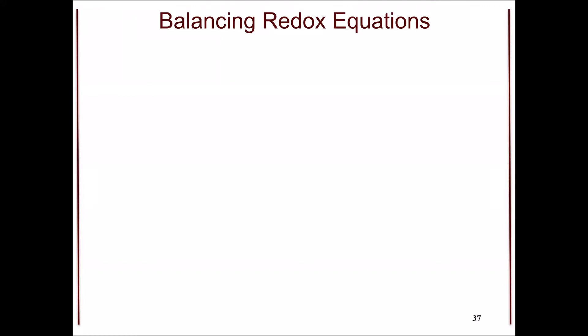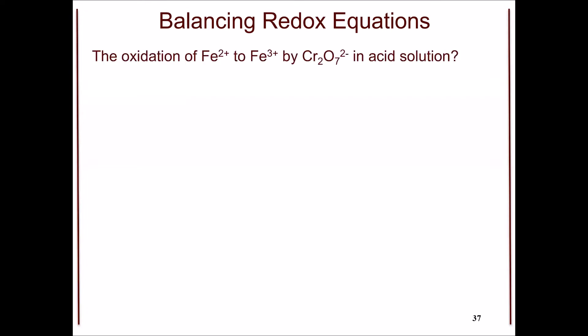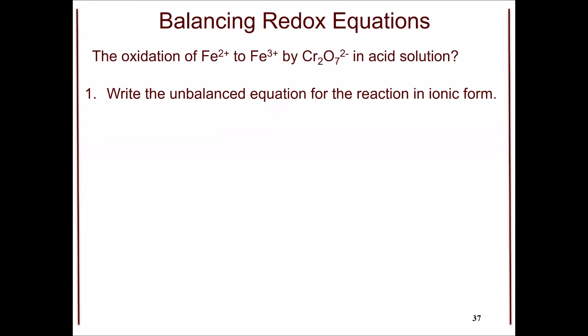Balancing a redox reaction is a little bit more tricky than a regular reaction. For example, the oxidation of iron 2+ to iron 3+ by chromate ion in an acid solution. We need to write an unbalanced equation that describes the reaction in ionic form: iron 2+ plus chromate ion gives iron 3+ and chromium 3+.